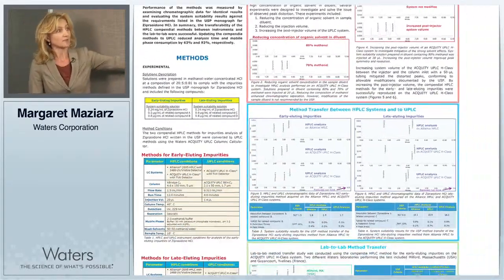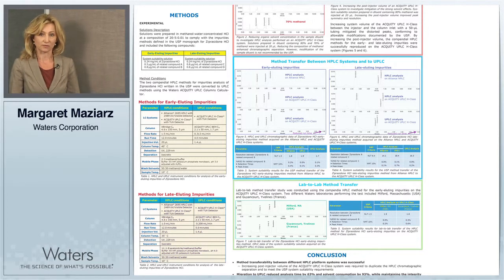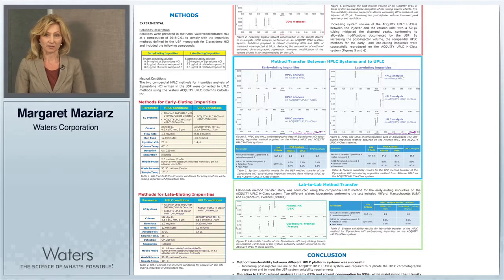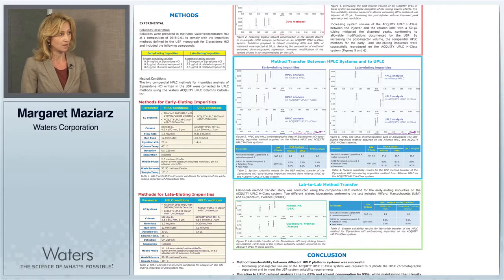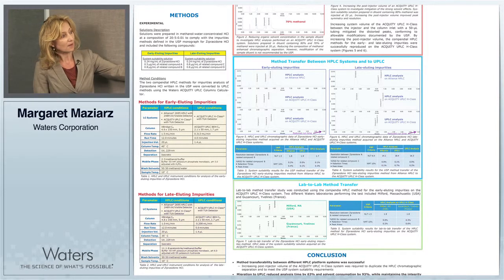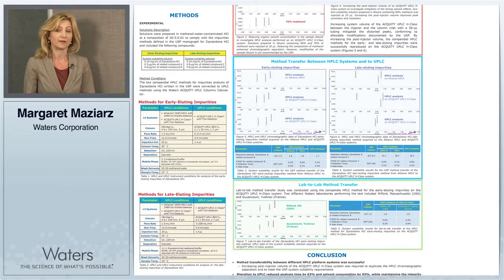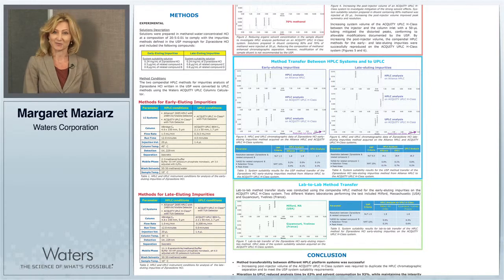We began our study by running the HPLC methods for ziprasidone hydrochloride related compounds on the Alliance HPLC system and an Acquity UPLC H-Class system. USP designates using an L7 column. We used the Waters reverse phase selectivity column chart to find an equivalent column to the L7 column, and we used an Acquity C8 column for UPLC testing.